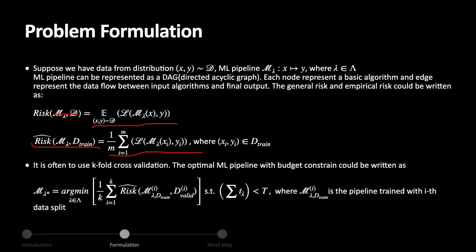The general risk and empirical risk could be written as below. The general risk is the expectation of the loss of the machine learning pipeline. The empirical risk is the average loss of the pipeline with respect to our training data. In order to deal with overfitting, it is common to use k-fold cross-validation. The optimal ML pipeline, lambda star, minimizes the cross-validated empirical risk, subject to the computational budget constraint that overall time is smaller than budget t.